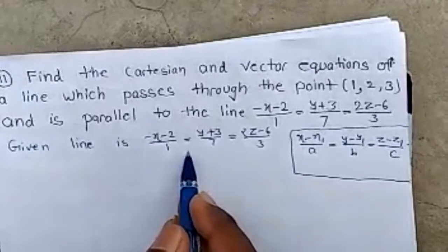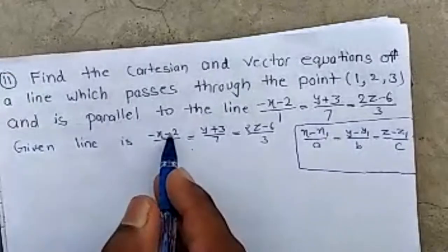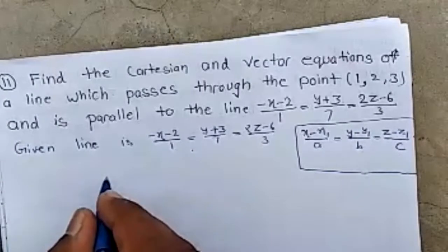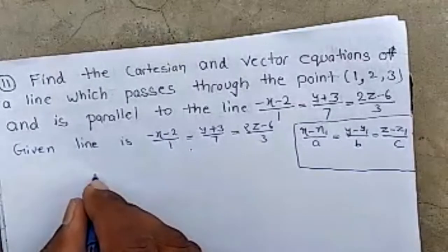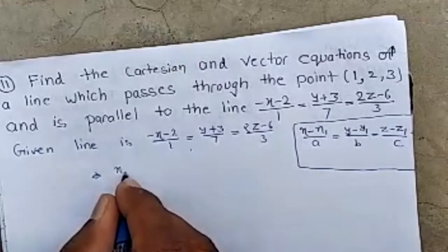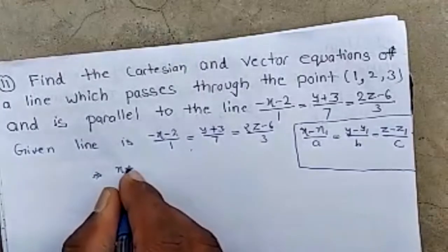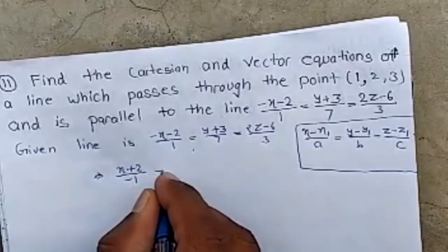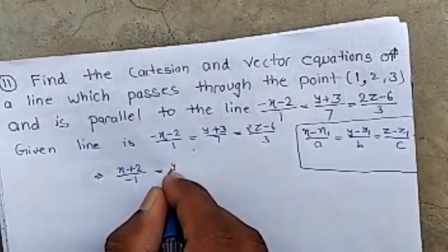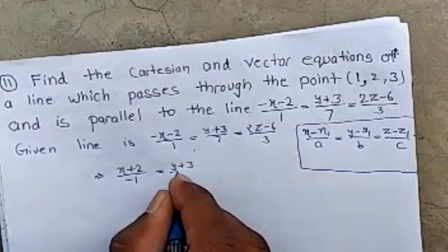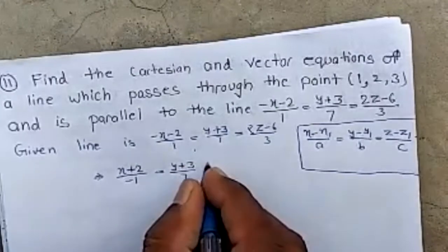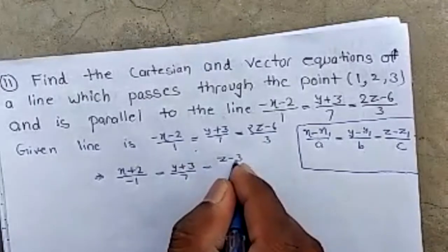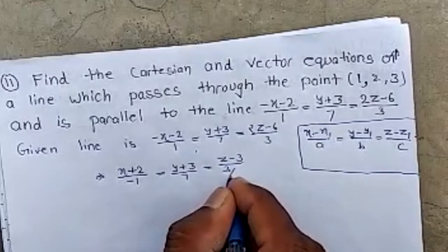Firstly, we change this equation into standard form. Taking −1 common: (x + 2)/(−1) = (y + 3)/7 = (z − 3/2)/3. Wait — (z − 6/3) becomes (z − 3/2) — correcting: (x + 2)/(−1) = (y + 3)/7 = (z − 3)/(3/2).